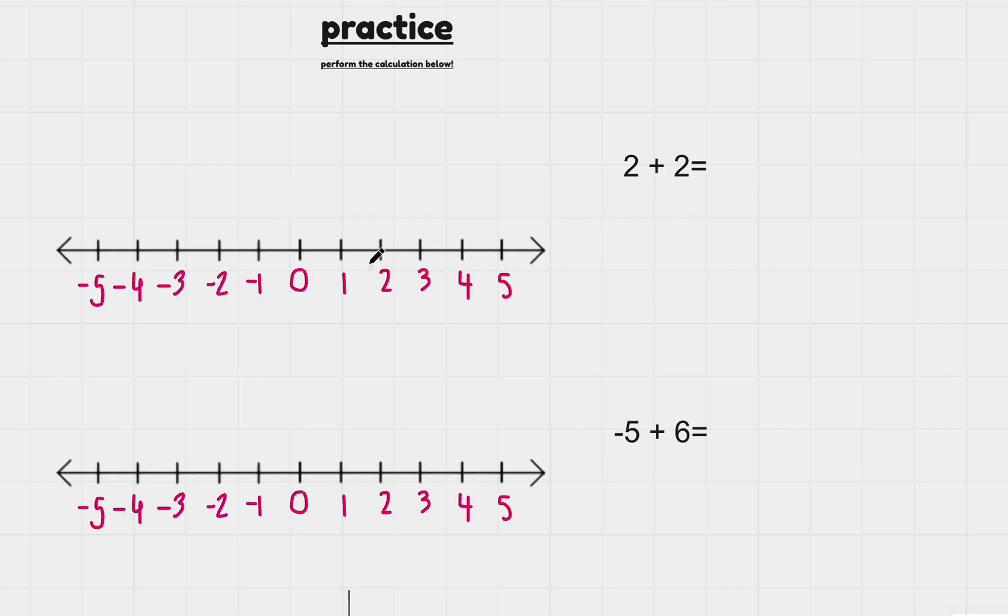Here we have 2 plus 2, so we're starting at 2 over here on the number line. We're adding 2, so we're jumping 1, 2, to get to 4. The answer is 4.